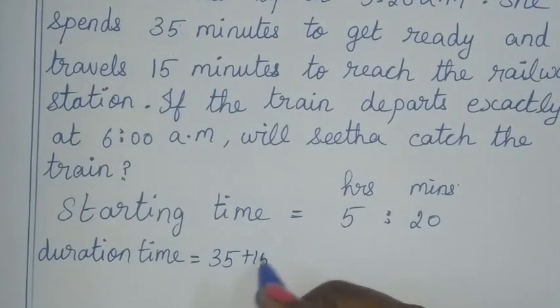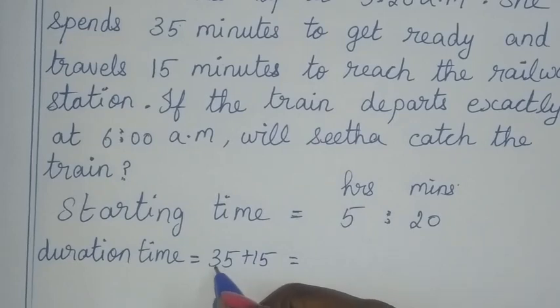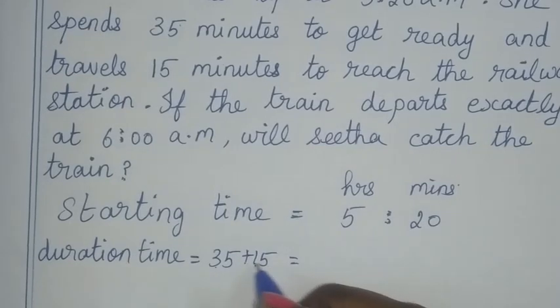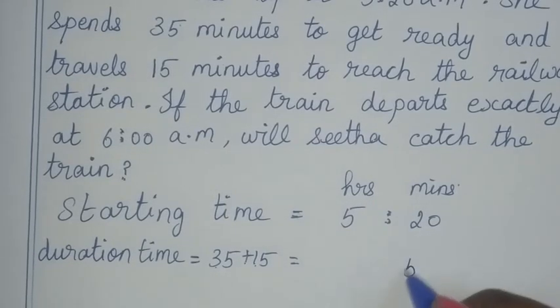35 plus 15: 30 plus 10 is 40, and 40 plus 10 is 50 minutes. So the total duration is 50 minutes.